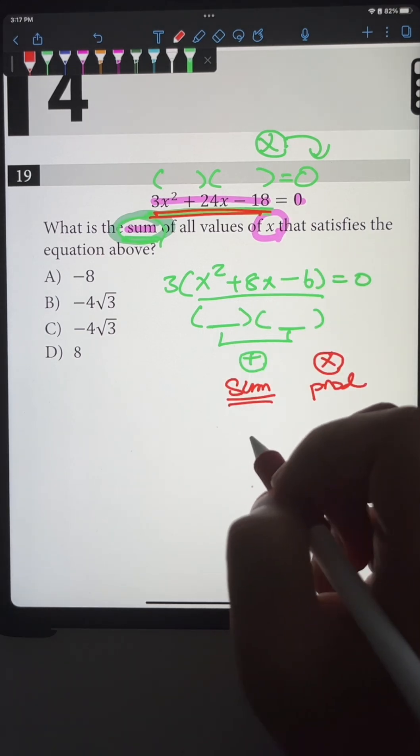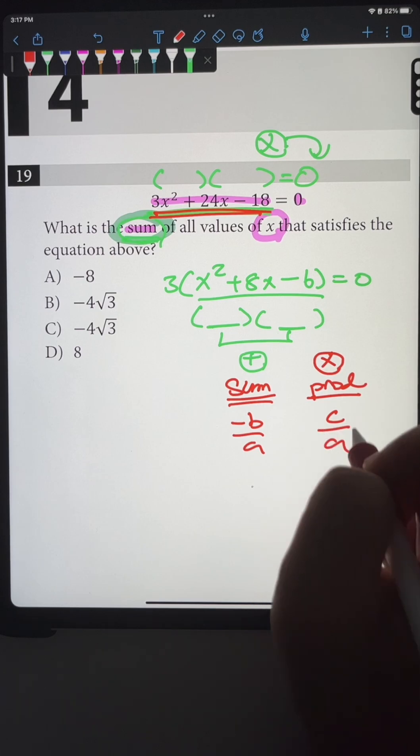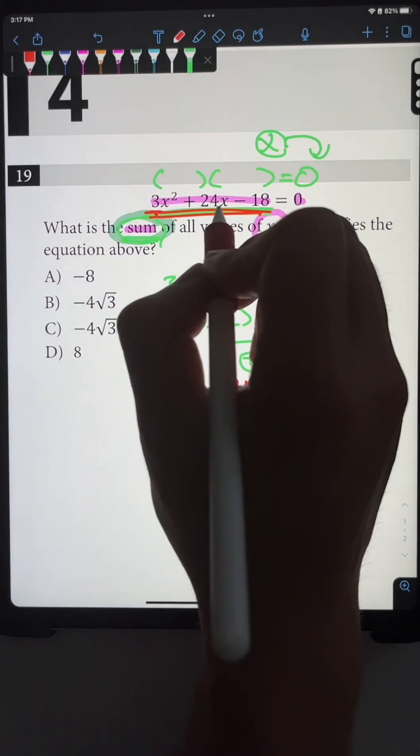For the sum of the x values, it's going to be -b/a. For product, it's going to be c/a. And what are these ABCs? Well, a is the coefficient of x², b is right there, and c is right there.